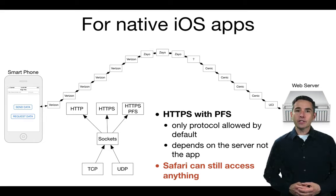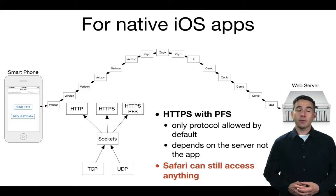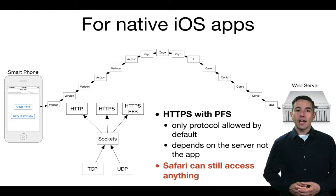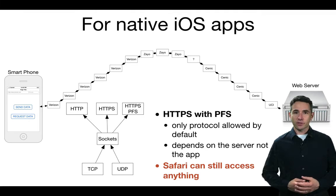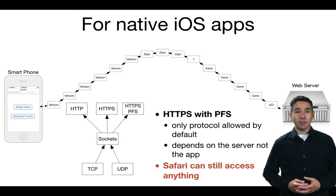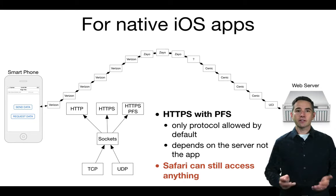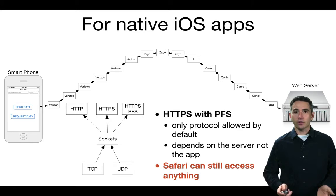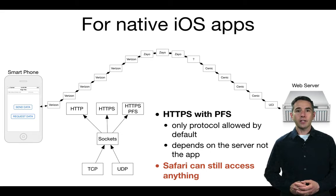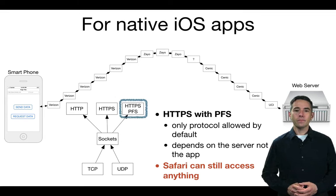In addition to web servers increasing their security, clients have also improved theirs. On iOS apps being written today, by default an app cannot communicate with a remote web server unless HTTPS with perfect forward secrecy is being used. To allow a native iOS application to access internet resources via URLs, the web server must use HTTPS with TLS version 1.2 or perfect forward secrecy. To use something lower, you must specifically request a security exception. Note: this doesn't apply to using the Safari web browser within an iOS app — that can still get lower-security content — but for native applications, higher security is required, and for good reason.